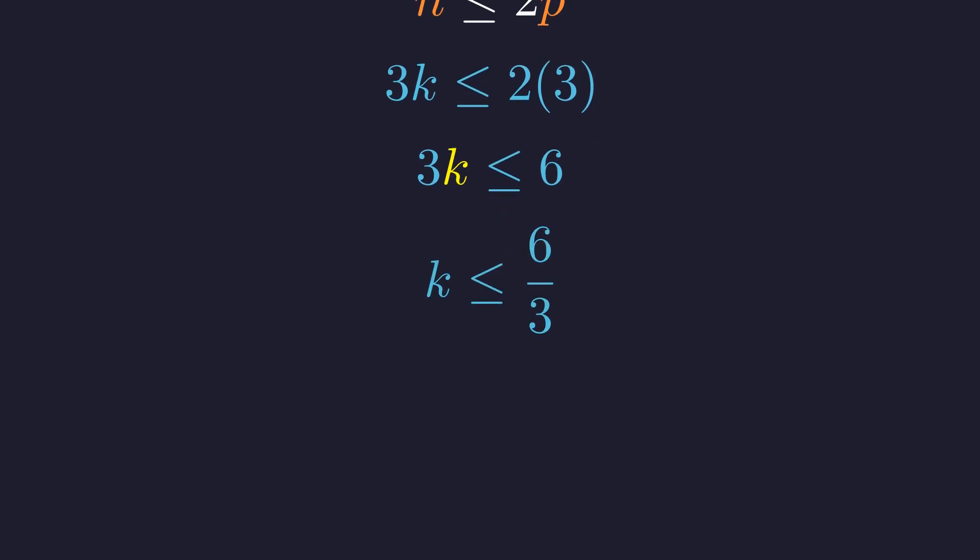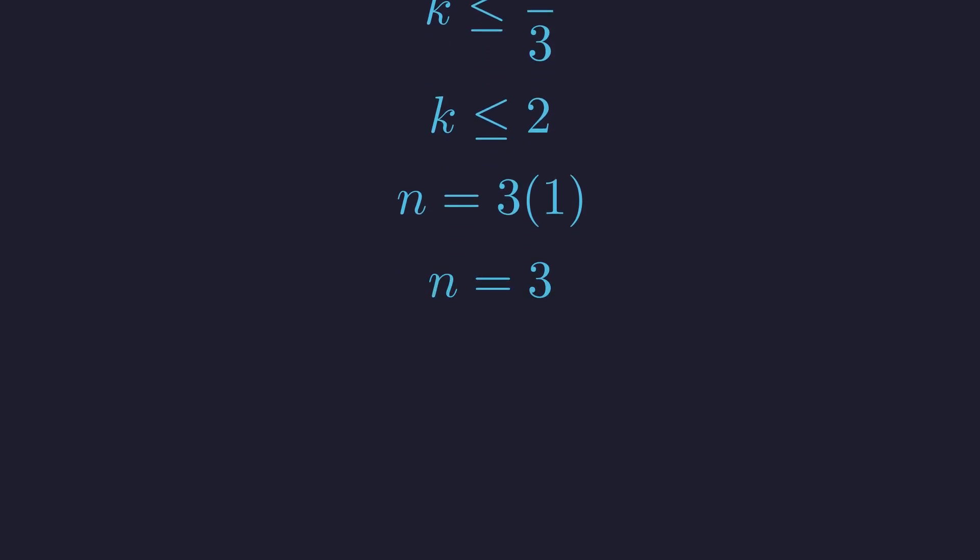Dividing both sides by 3 yields k ≤ 2. We know k must be a positive odd integer not divisible by 3, and k is at most 2. The only integer satisfying all these conditions is k equals 1. Substituting k equals 1 back into the definition n equals 3k gives n equals 3. This yields our final candidate solution, the pair (3, 3).